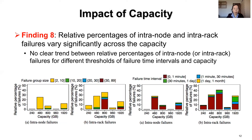We analyze the impact of capacity on correlated failures. The left figures show that the relative percentages of intranode and intrarack failures vary significantly across capacity. The right figures show no clear trend between the relative percentages of intranode or intrarack failures for different thresholds of failure time intervals and the capacity.